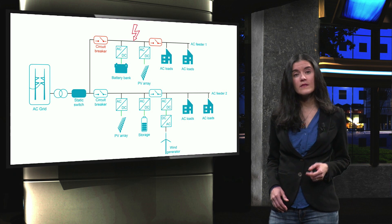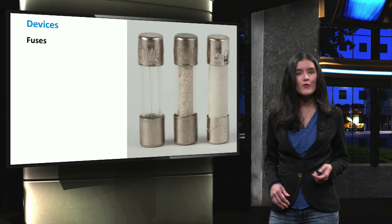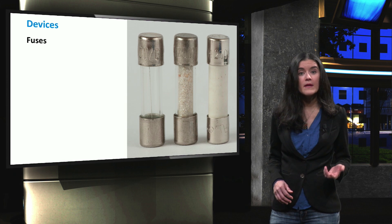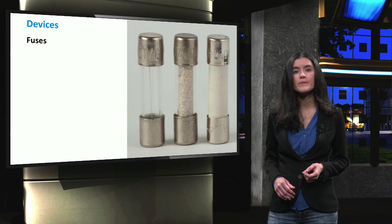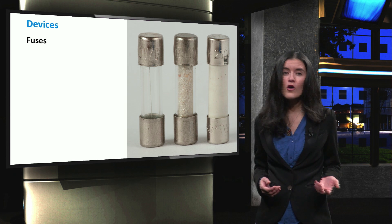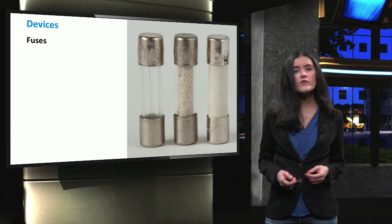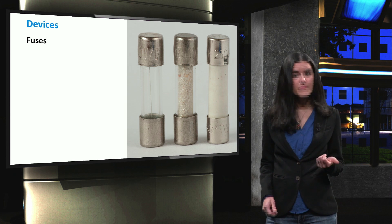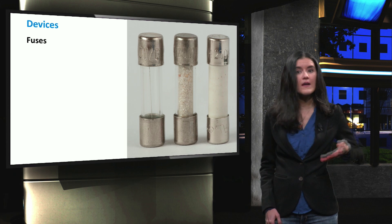We mentioned that different types of protection devices can be used in low voltage microgrids, namely fuses, relays and circuit breakers. A fuse is a protective device that interrupts a circuit when an overcurrent occurs. The fuse is a one-time device, which means that it should be replaced every time it serves its purpose.